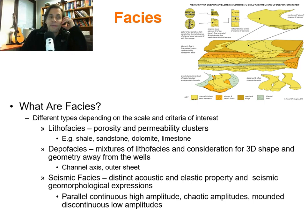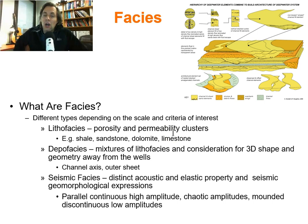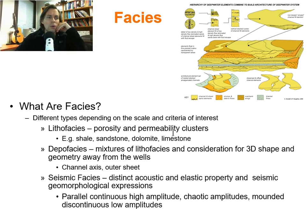There are many different types of facies, but these are the most typical within subsurface modeling. Lithofacies are rock with distinctly different petrophysical properties — permeability and porosity — distinctly different from each other. Examples include shale, sandstone, dolomite, and limestone. However, lithofacies may not have a lot of information with regard to geometry and prediction away from the well location. They might change too much, too quickly, and may not have good correlations.